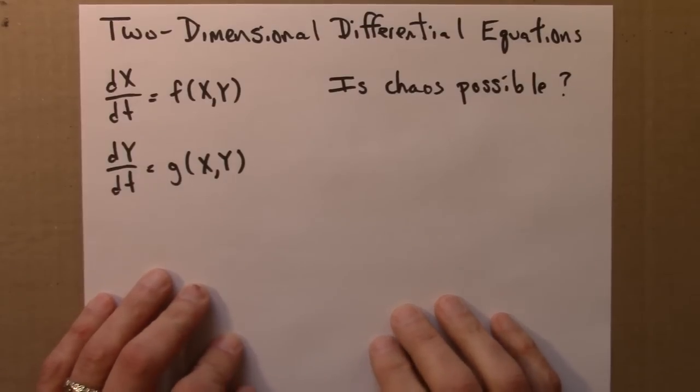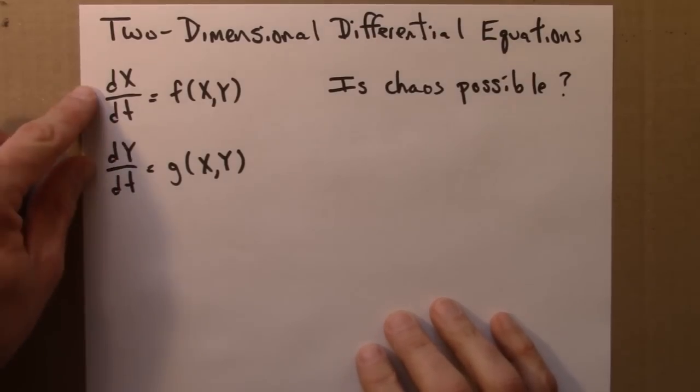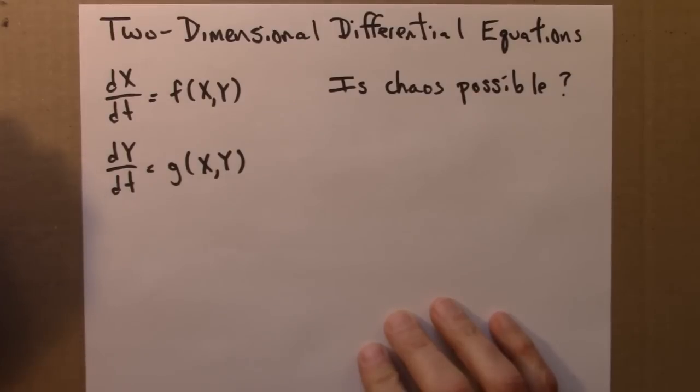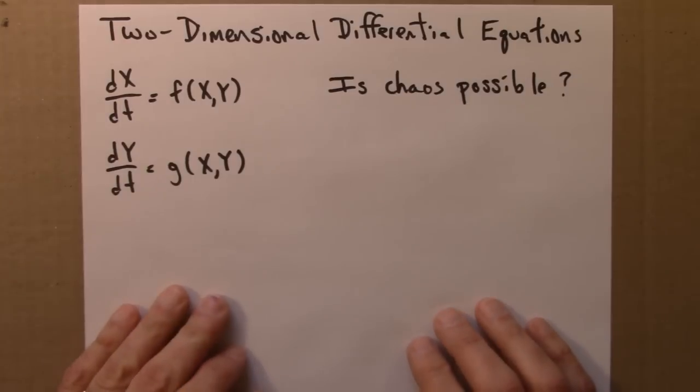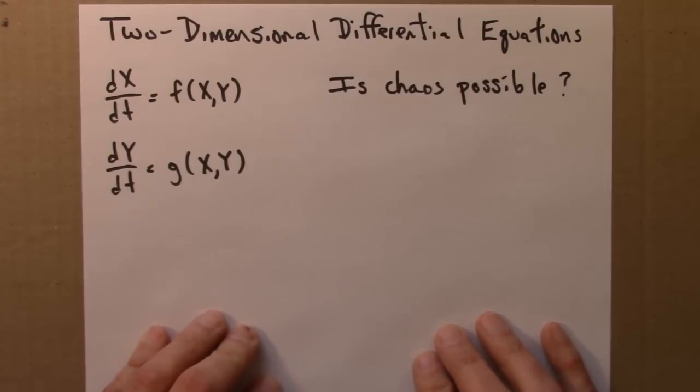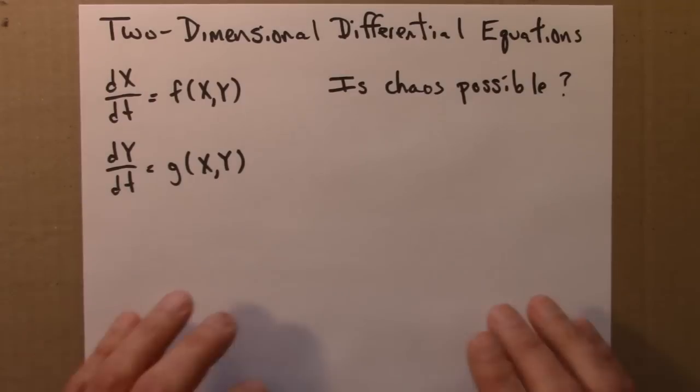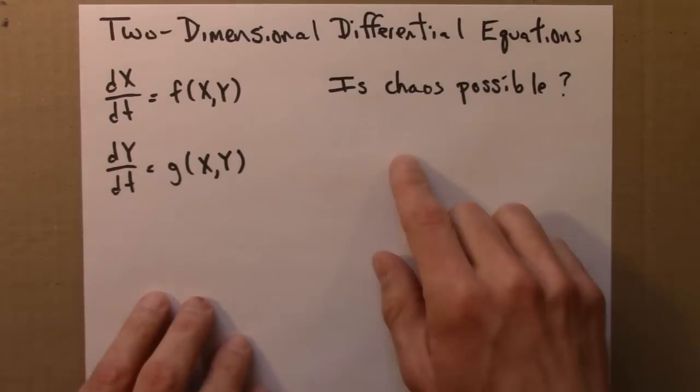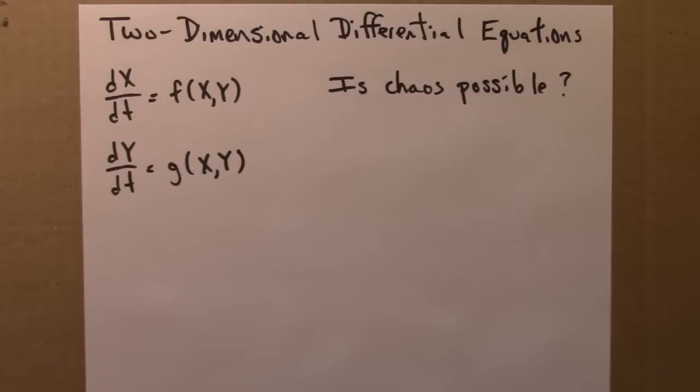So far, we've seen that two-dimensional differential equations of this form can have fixed points, equilibria that can be attracting or repelling. And an orbit could fly off to infinity. I haven't shown an example of that, but it's not hard to construct one. We can have cycles, neutral cycles like in the Lotka-Volterra equation, or an attracting cycle, sometimes called a limit cycle, in the van der Pol equations that we just saw. But what about chaos? Can we have chaos in these two-dimensional systems? So let's think about this.